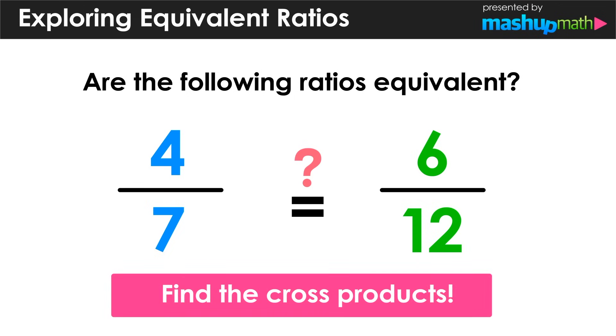Then we can find the cross products and see whether or not they are equal. We'll start with 4 times 12, whose product is 48, and compare that to the second cross product, 7 times 6, whose product is 42.